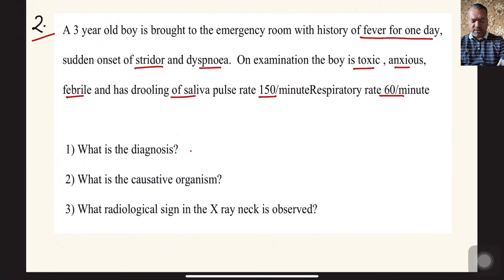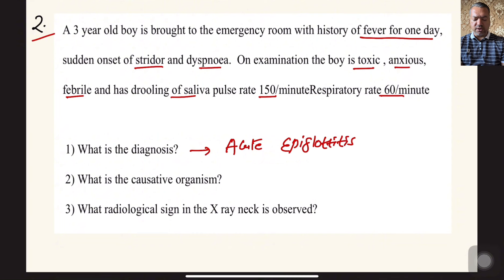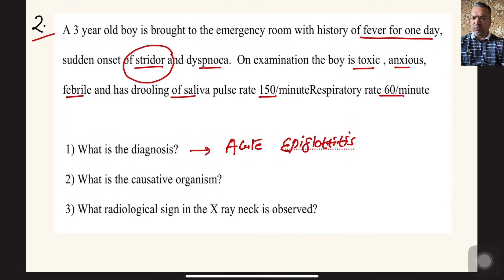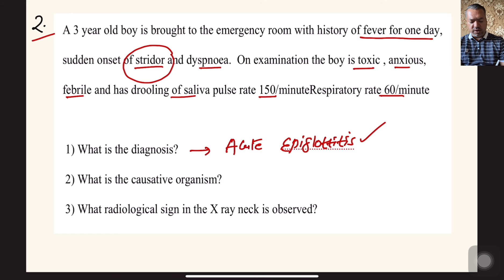With this history, the clear-cut case is of acute epiglottitis. The differential diagnosis for sudden onset stridor includes: acute epiglottitis, croup syndrome, foreign body obstruction, and acute tracheitis. This looks like acute epiglottitis because of the drooling of saliva — whenever the epiglottis is inflamed, the child cannot swallow even their own saliva. This is a very important clinical point.